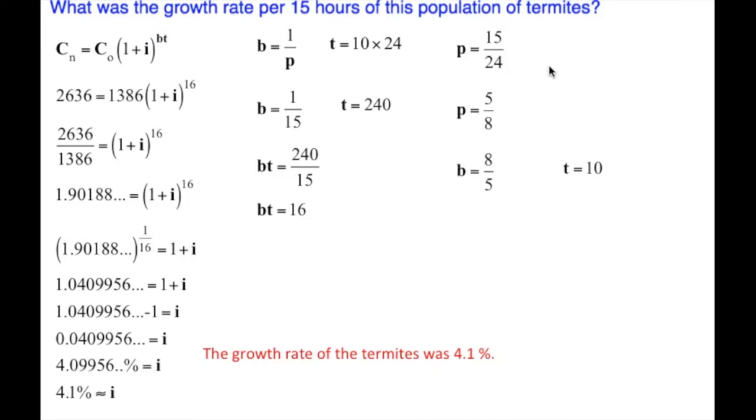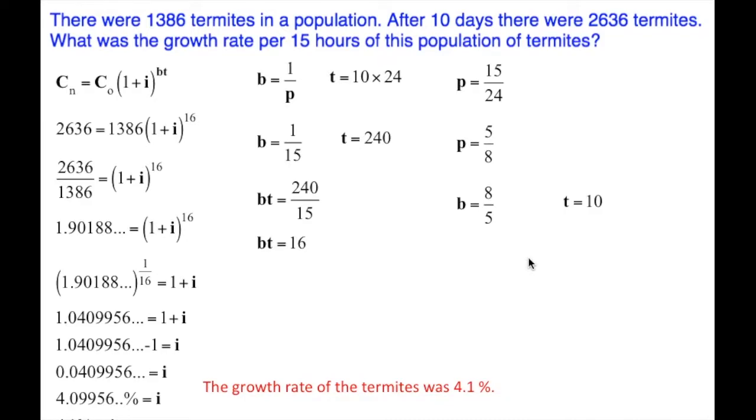The time is going to be 10, and we're talking about days. This is 8/5 of a day, and so our time is 10 days. Our B times T is 8/5 times 10. The 5 cancels with the 10, gives us 2 times 8 is 16. So BT is 16.